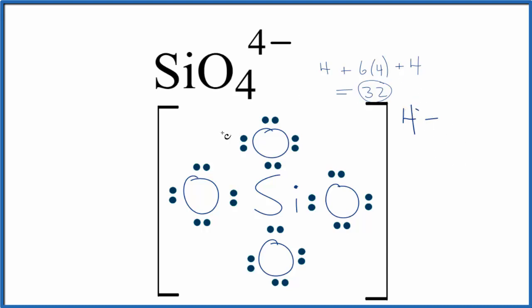So that's it. This is the Lewis structure for SiO4 four minus, and this is Dr. B. Thanks for watching.